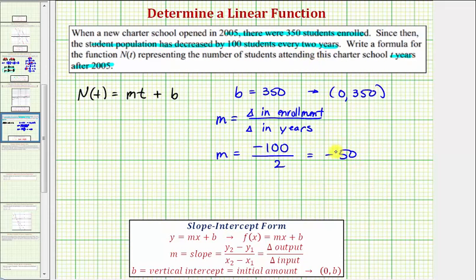This is all the information we need to write our linear function. We now know that n(t) is equal to negative 50t plus b, which equals 350.